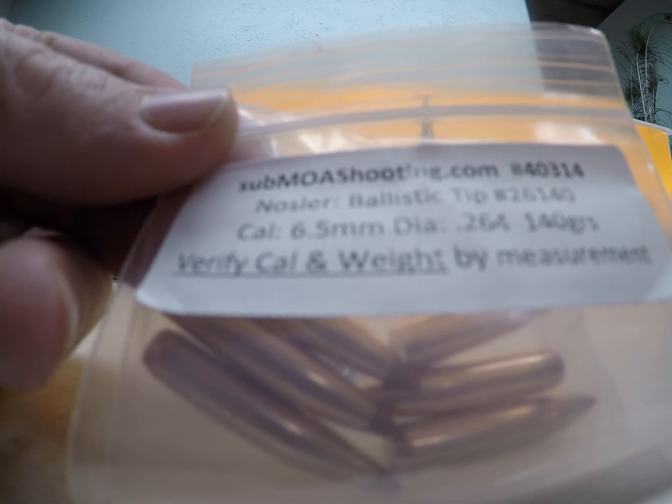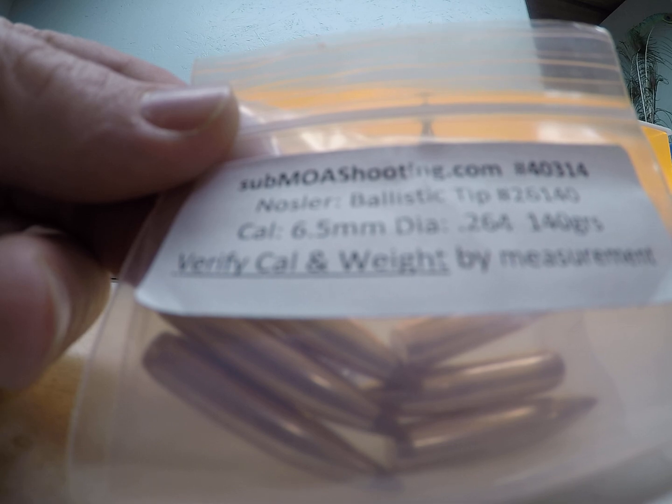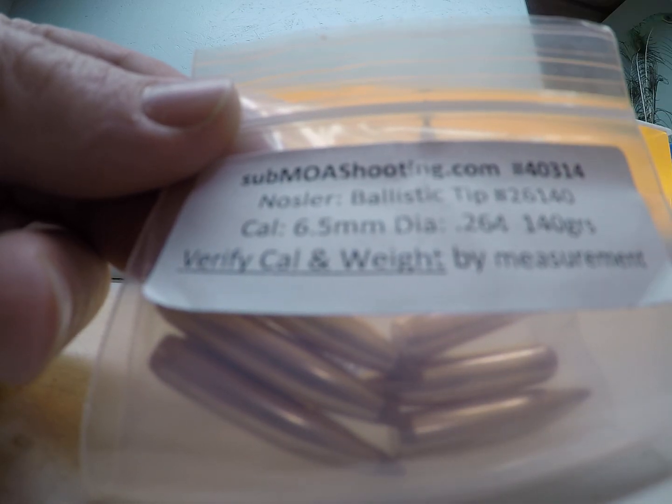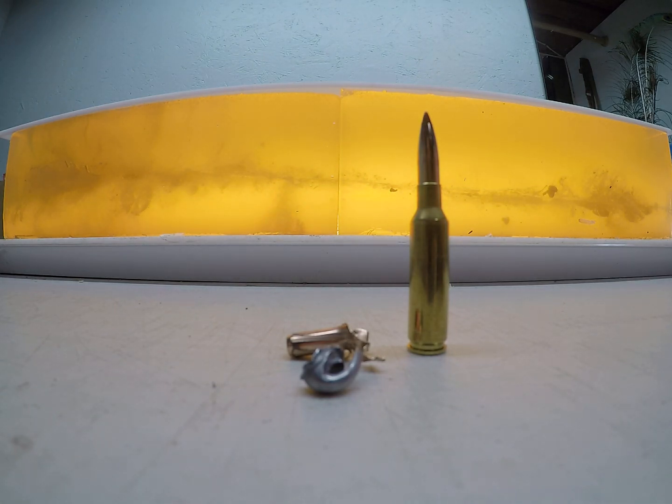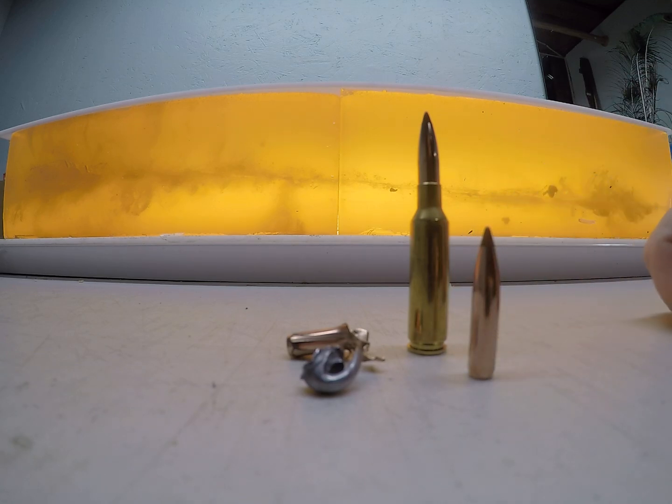I'll go over these gel blocks in more detail, showing how the .264 140 grain Nosler ballistic tip performed when shot out of a 6.5 Creedmoor. These sample packs are where I get my bullets for my tests at SubomoeShooting.com. Great place to get sample packs if you want to do some testing.